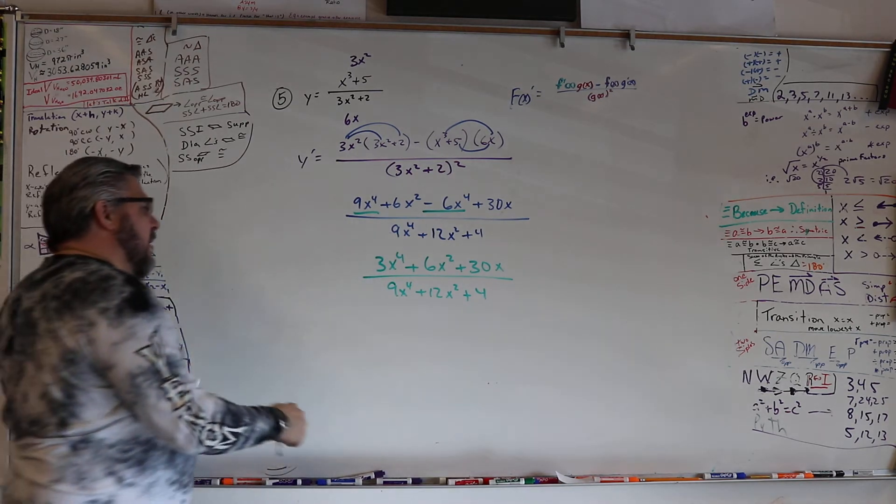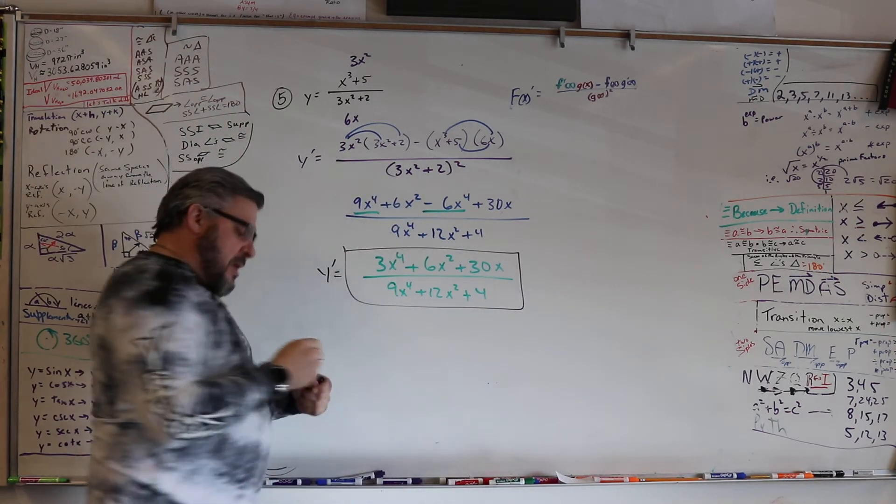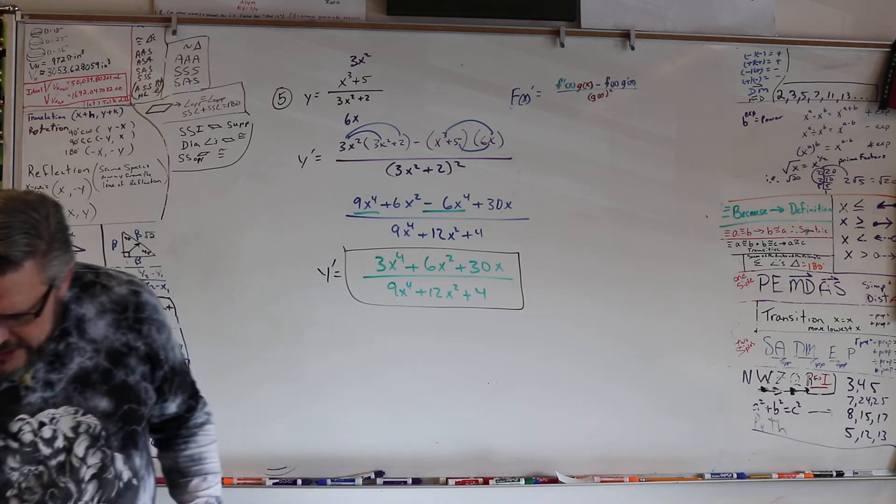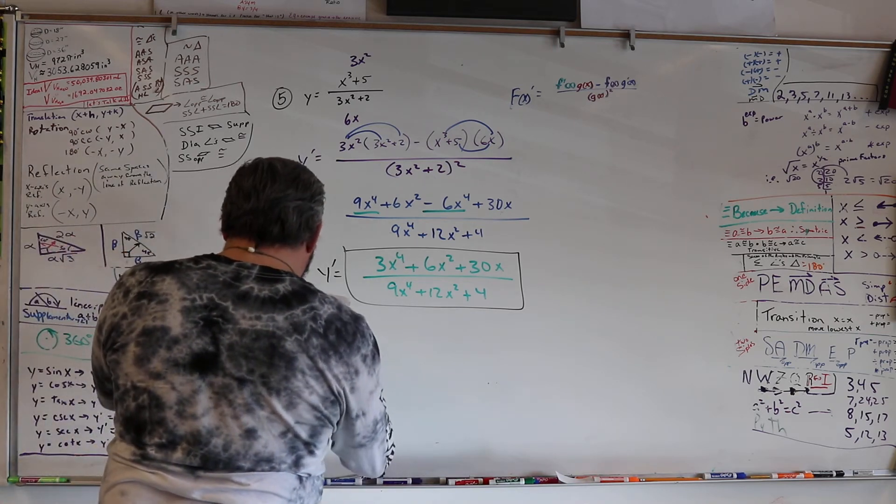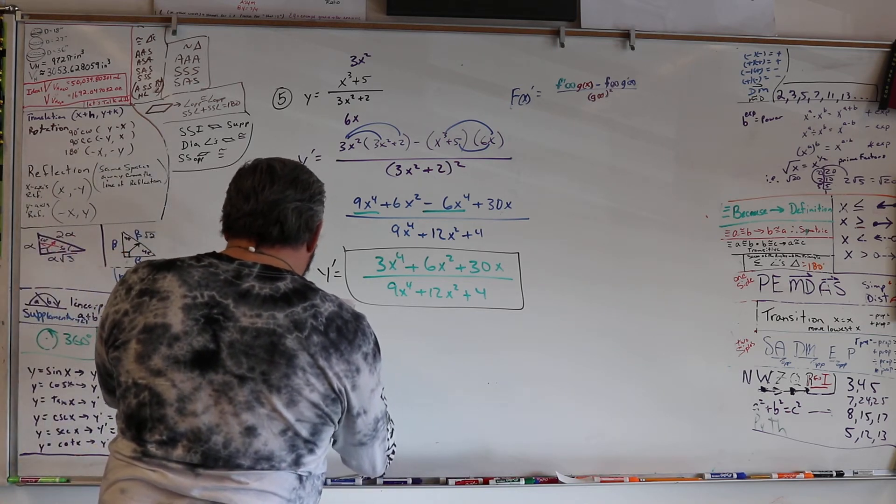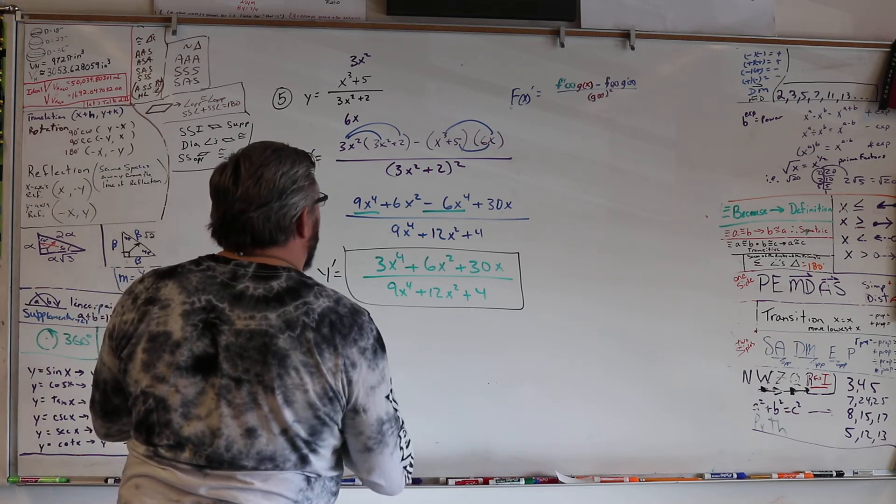So, right then and there, I'm going to say, we're done. That is y prime. Now, let's see if we're right. And we got 3x to the fourth, plus 6x squared, minus 30. What did I do wrong there?